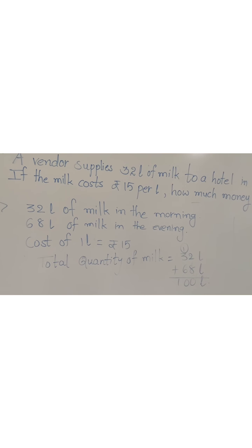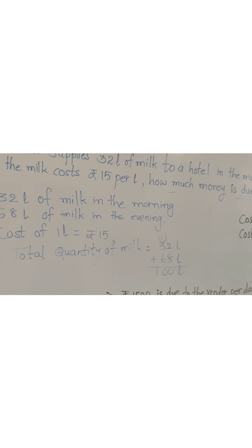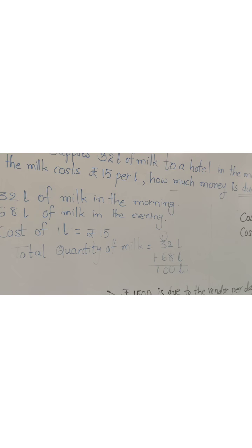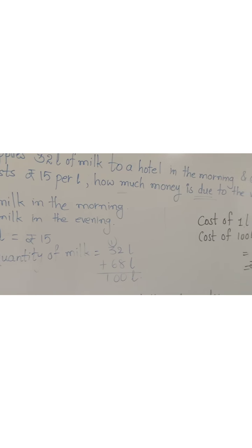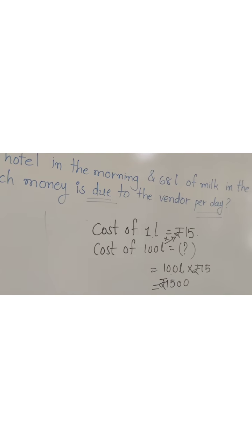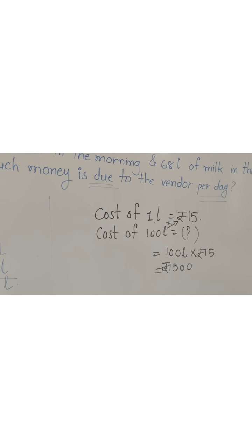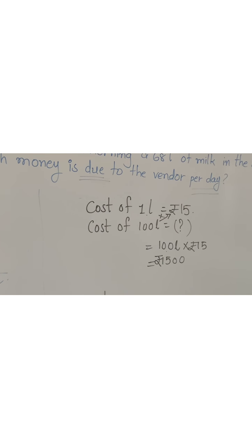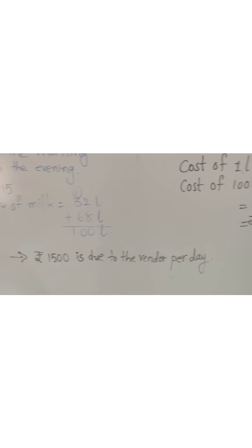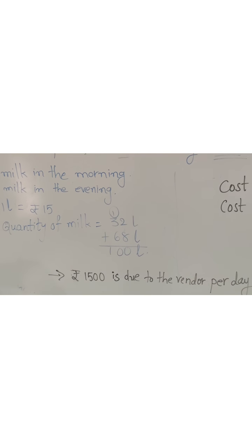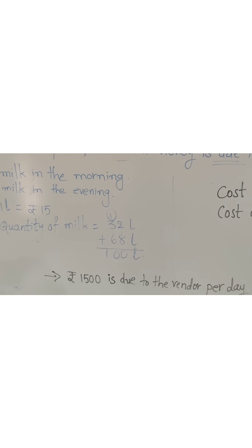So first, make a list of everything given. Then find the total quantity of milk since we need the per-day amount. Then find the cost by multiplying with the per-litre rate to get the final answer. Understood? Thank you.